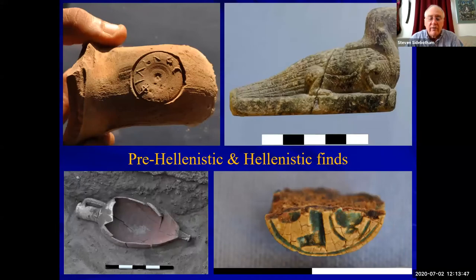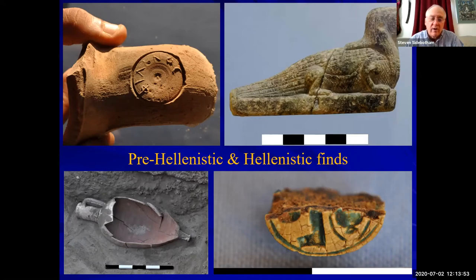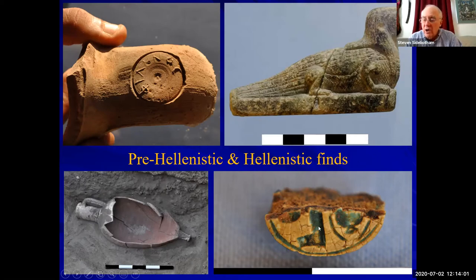Here's some other evidence from this period: stamped amphora handles, another broken amphora. This horse-headed figure was an Egyptian sun god crocodile. And this cartouche, which dates from the 10th century BC, must have been someone's heirloom.